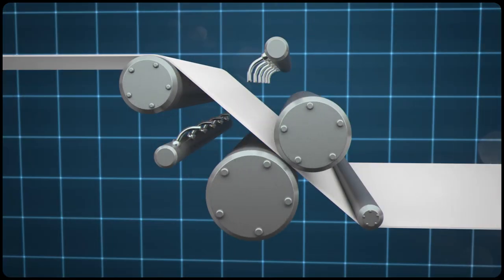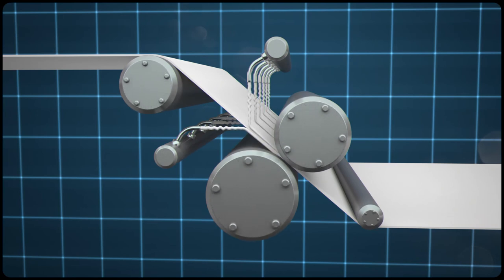At the surface sizing stage, a starch solution is applied to both sides of the web to prepare it for coating. It binds the fibres to the surface and adds strength to the board.